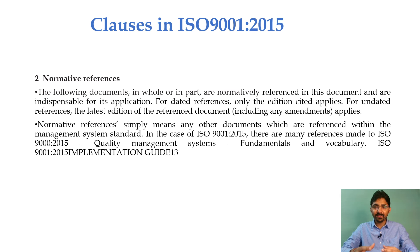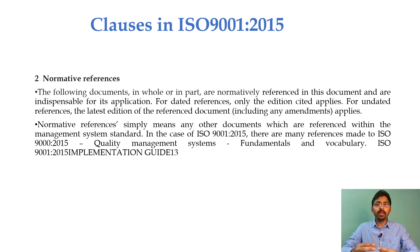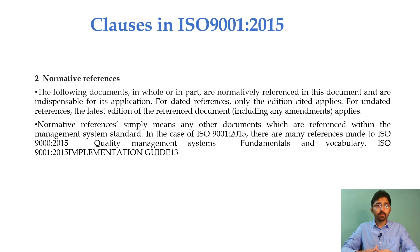Clause number 2 is normative reference. The following documents in whole or in part are normatively referenced in this document and are indispensable for its application. For dated reference, only the edition cited applies. For undated reference, the latest edition of the referenced document including any amendments applies. Normative reference simply means any other documents referenced within the management system standard. In the case of ISO 9001-2015, references are made to ISO 9000-2015 QMS Fundamentals and Vocabulary, and the ISO 9001-2015 Implementation Guide.